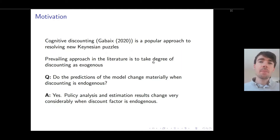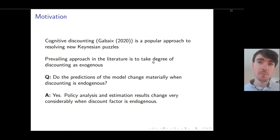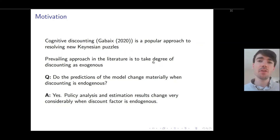Cognitive discounting — the notion that firms and consumers don't pay full attention to the future when making decisions today — has become a popular way to resolve puzzles in the New Keynesian model. The prevailing approach in the literature has been to assume that the degree of discounting is exogenous when analysing behaviour in New Keynesian models.